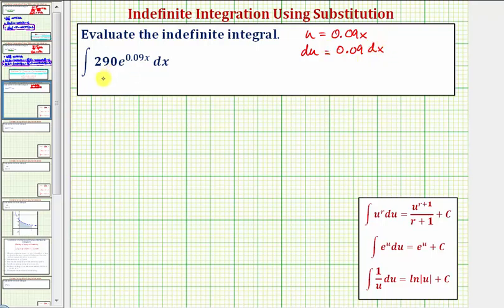But notice how we don't have 0.09 dx as part of our integral. So we'll solve this for dx by dividing by 0.09 on both sides. Simplifying, we now know that one over 0.09 times du equals dx.